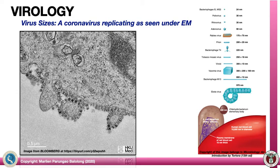In terms of size, viruses also vary and we normally utilize the electron microscope to visualize them. This is an example of a coronavirus replicating as seen under the electron microscope. Size varies from the most tiny bacteriophage to the biggest, like the Ebola viruses. For reference, here are also the Chlamydia bacterium, E. coli, and the human RBC, so you can imagine how tiny viruses really are.